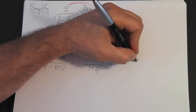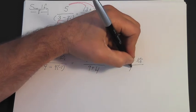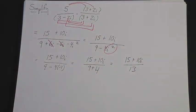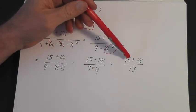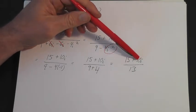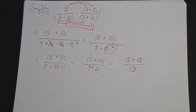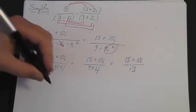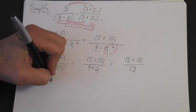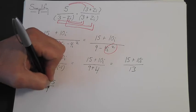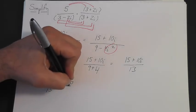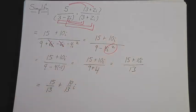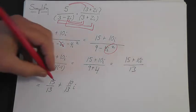So you have 15 plus 10i over 13. This would be a fine answer, but since we have both a real part and an imaginary part, we'd like to split them out. So we write it as 15 over 13 plus 10 over 13 i. And that's your final answer.